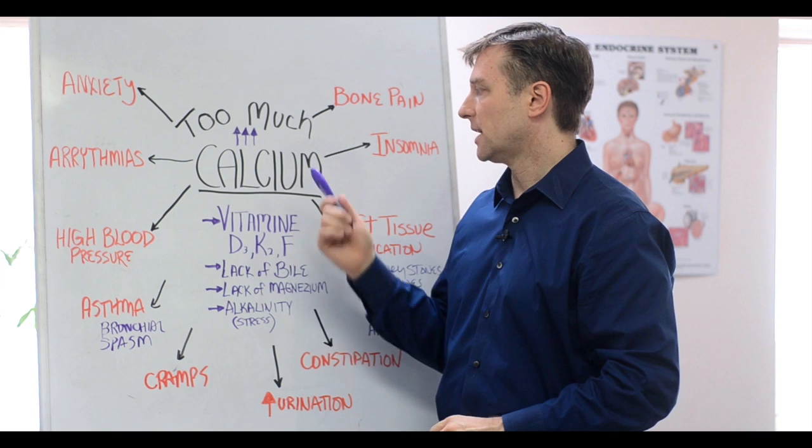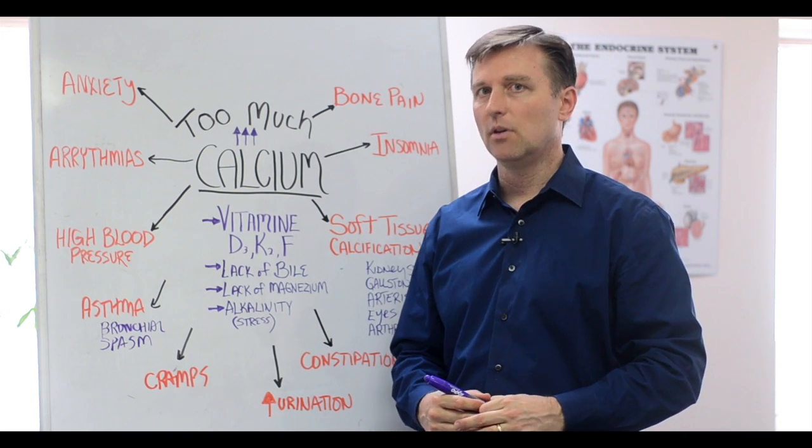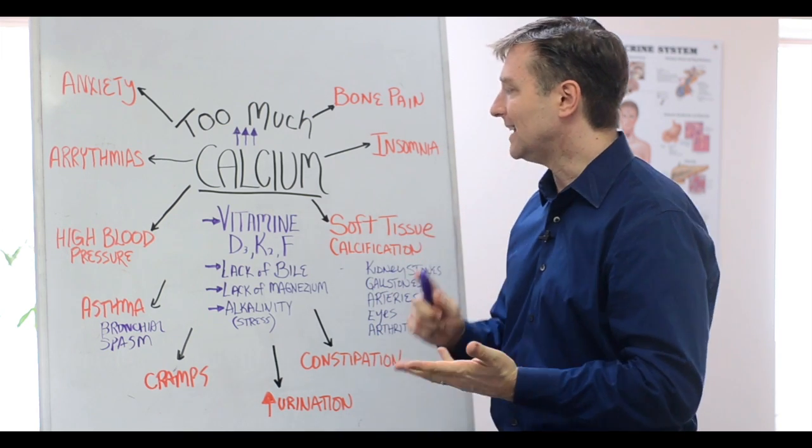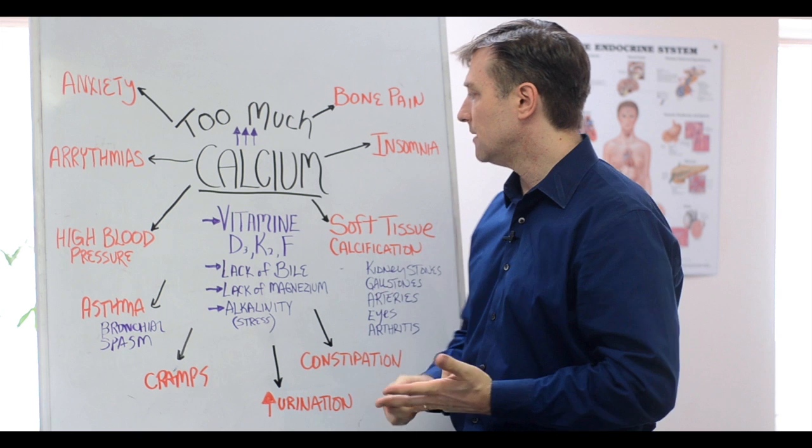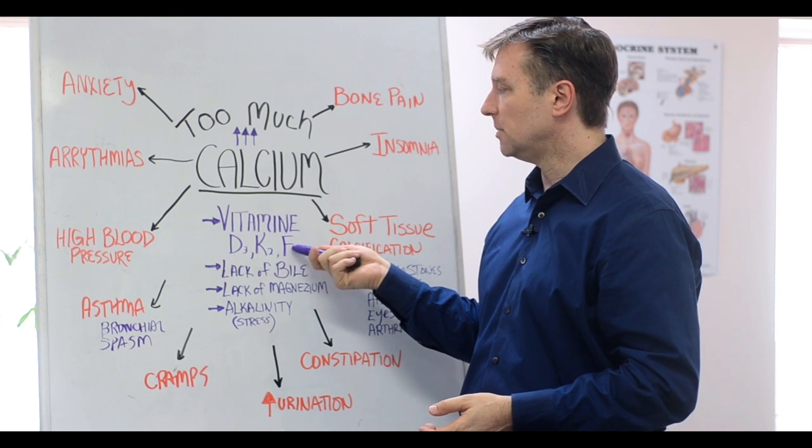How do you develop too much calcium? Number one, you become deficient in the fat-soluble vitamins. That would be specifically vitamin D, vitamin K2, and vitamin F, which is basically the essential fatty acids. That would be like fish oils.